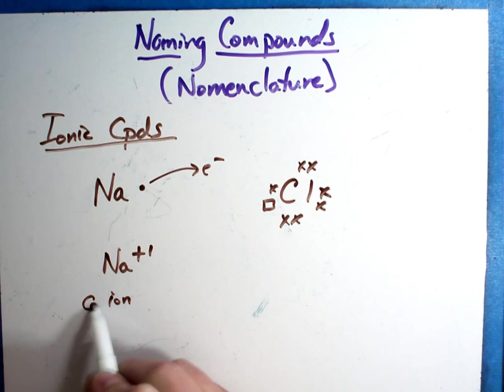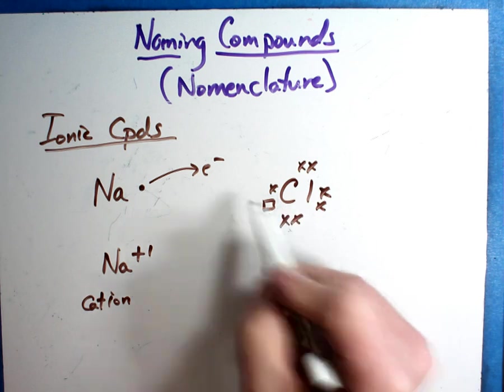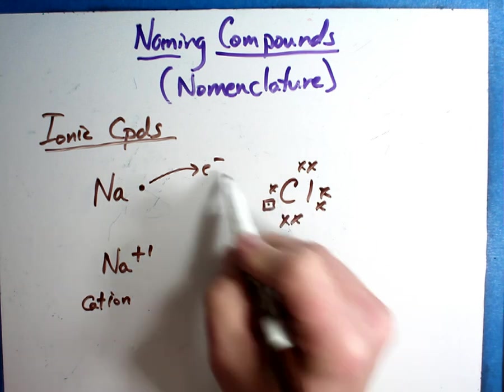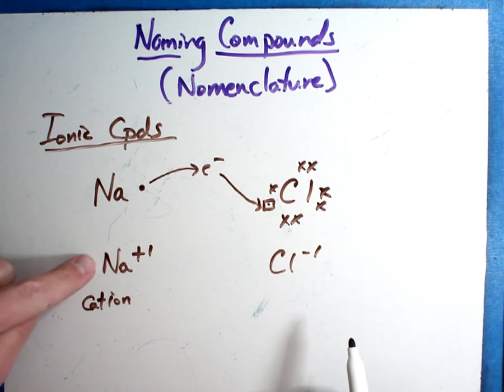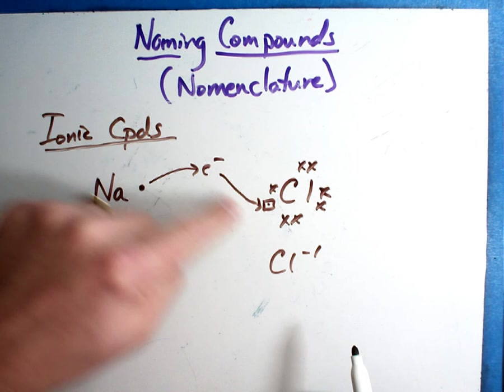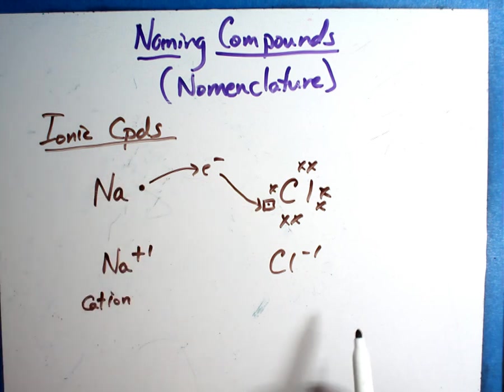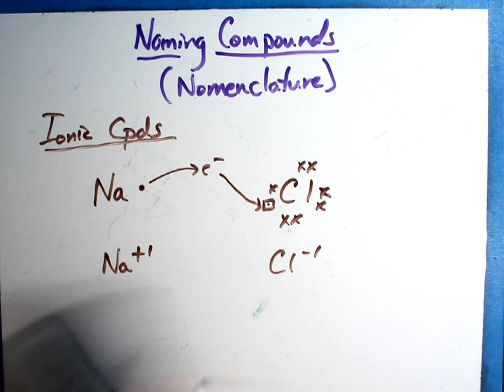Sometimes you'll see it as what is called a cation, meaning a positive ion. The chlorine is going to take in that electron. It's going to go right there. And he's going to become negative one. Throwing away an electron is positive. Gaining electrons - the object you're gaining is actually negative. So you become more negative. So chlorine becomes negative one, sometimes called an anion. It's the only time I'm going to use those words, but now you get it. Cation, anion.